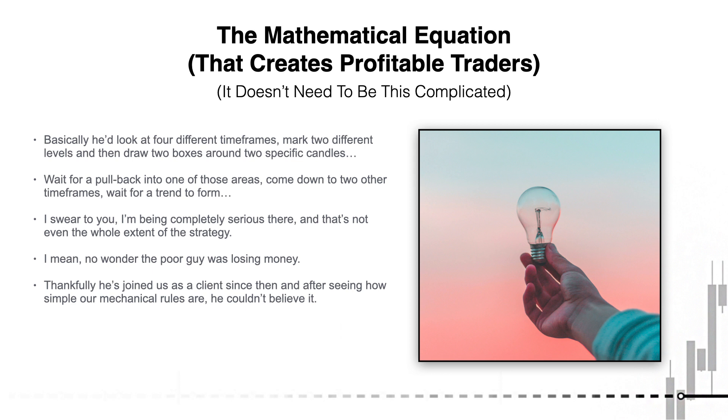He'd mark two or three different levels. He'd then draw some boxes around certain specific handles. He'd wait for a pullback into one of those areas, come down to two other timeframes, wait for a trend change. Honestly, I swear to you, I'm being completely serious here. And that's not even the whole extent of the strategy either. I mean, God, no wonder the poor guy was losing money. Now, thankfully, he's joined us as a client.